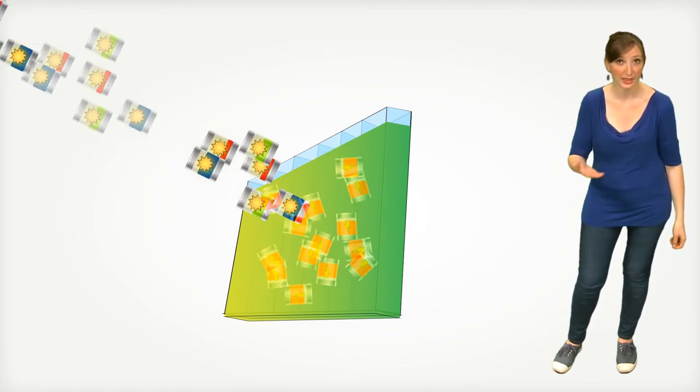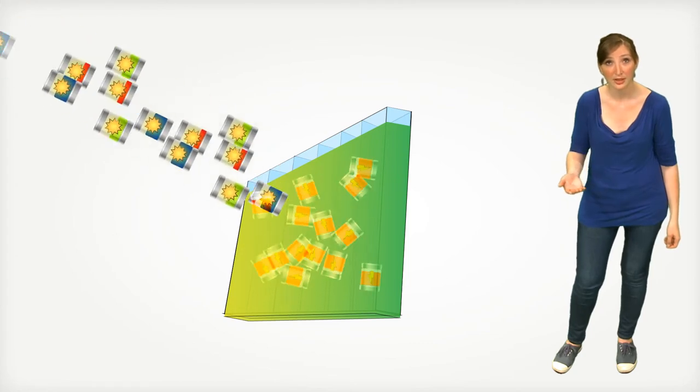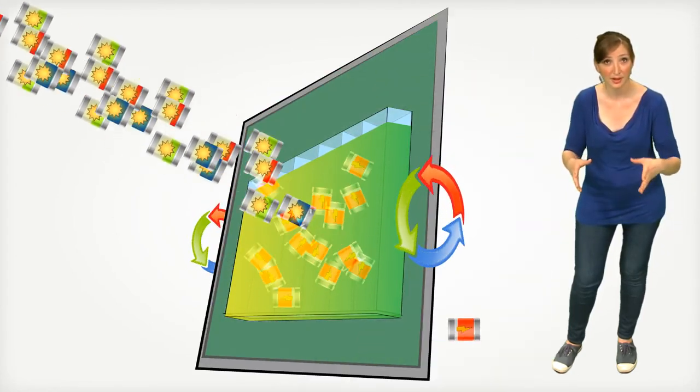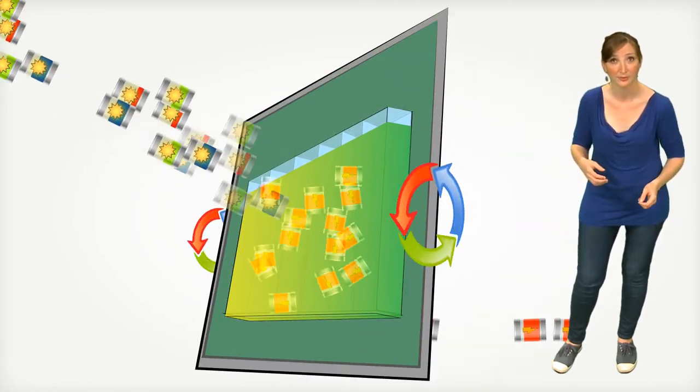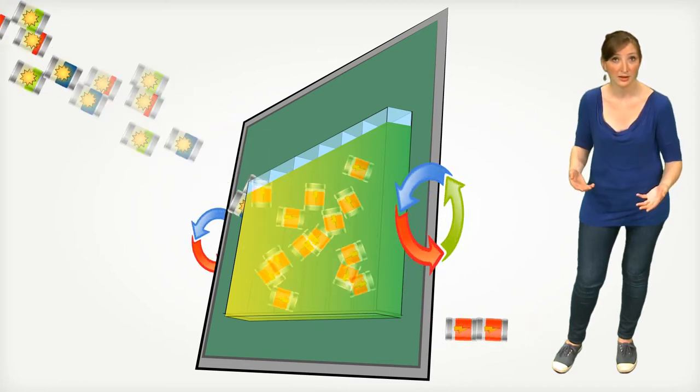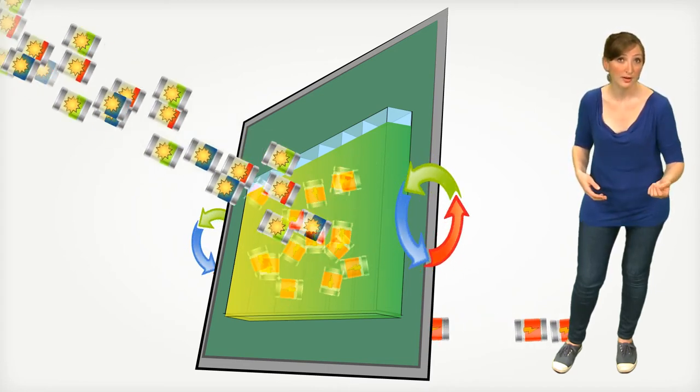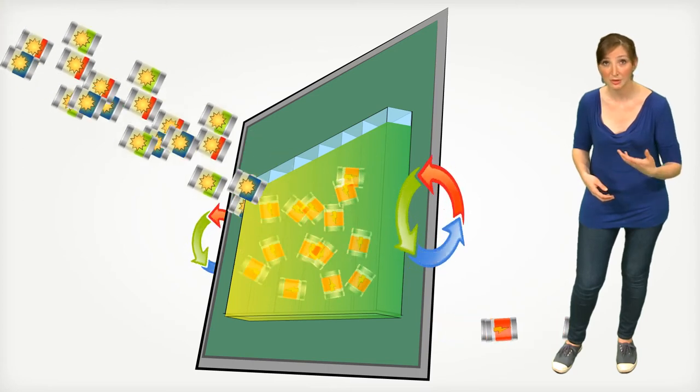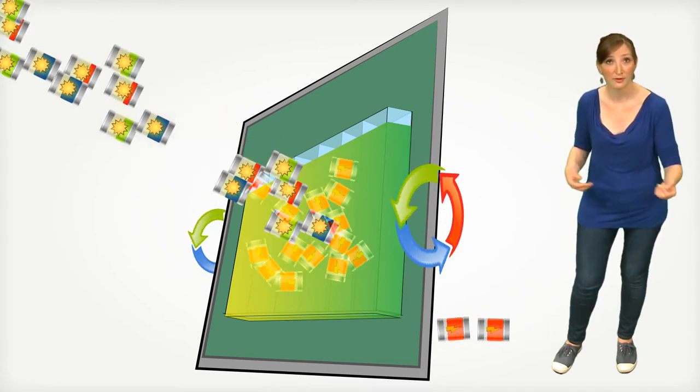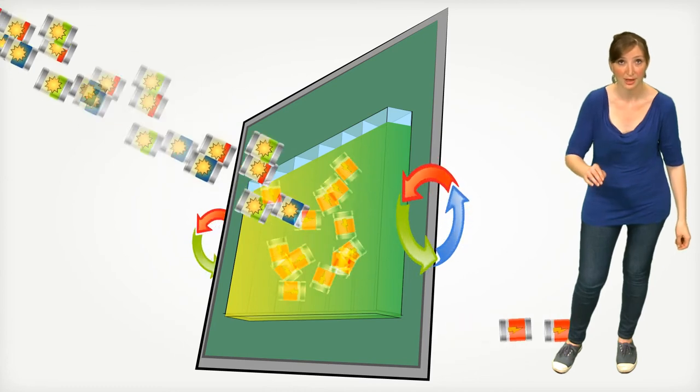These electrons are captured by a semiconductor in contact with both the pigment and the cell's negative electrode. The rest of the cell is similar to what we find in a battery, which is a chemical solution that ensures the transport of electrical charges within the battery.